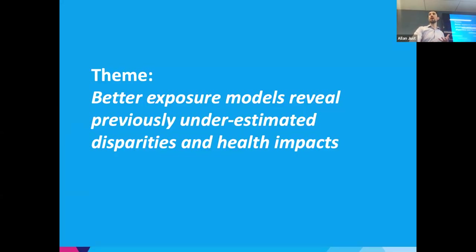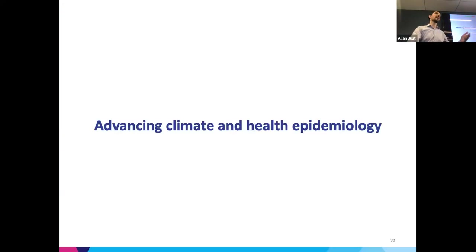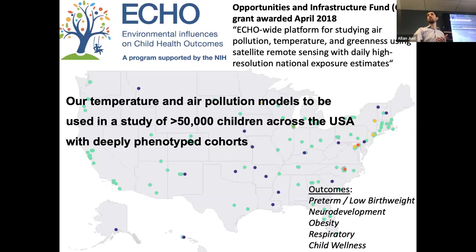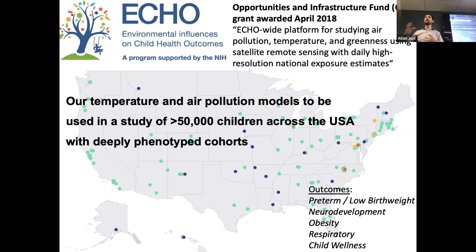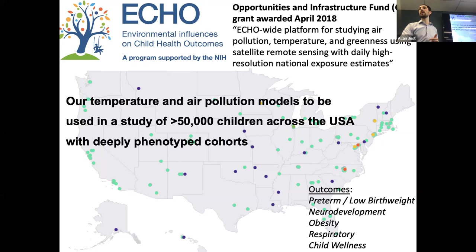The theme is that better exposure models reveal previously underestimated disparities and health impacts, helping us advance climate and health epidemiology. Some of the original support for going national was to link these exposures with the NIH's Environmental Influences on Child Health Outcomes study. The hope was that using consistent exposure methodologies on these cohorts throughout the United States would help better link significant environmental exposures with children's outcomes in a number of health domains, from birth outcomes through neurodevelopment.